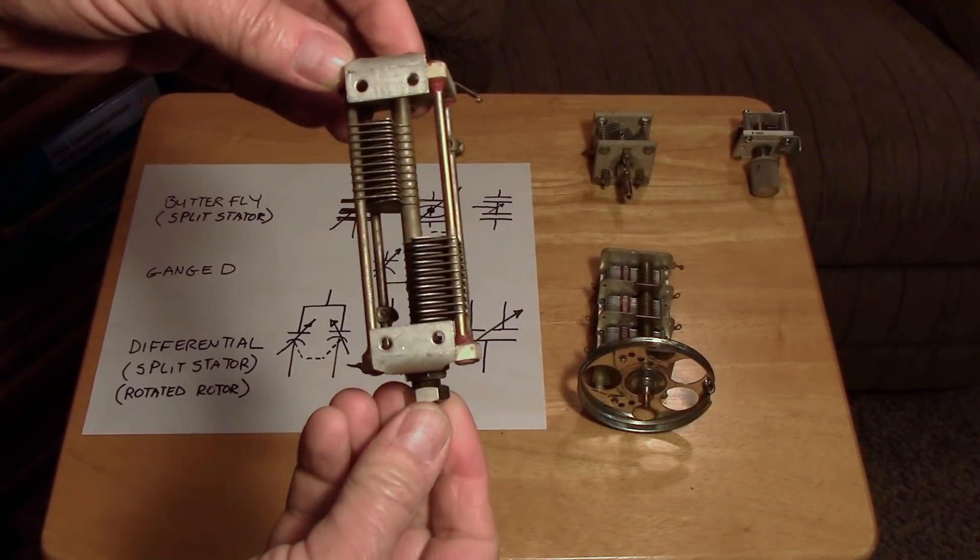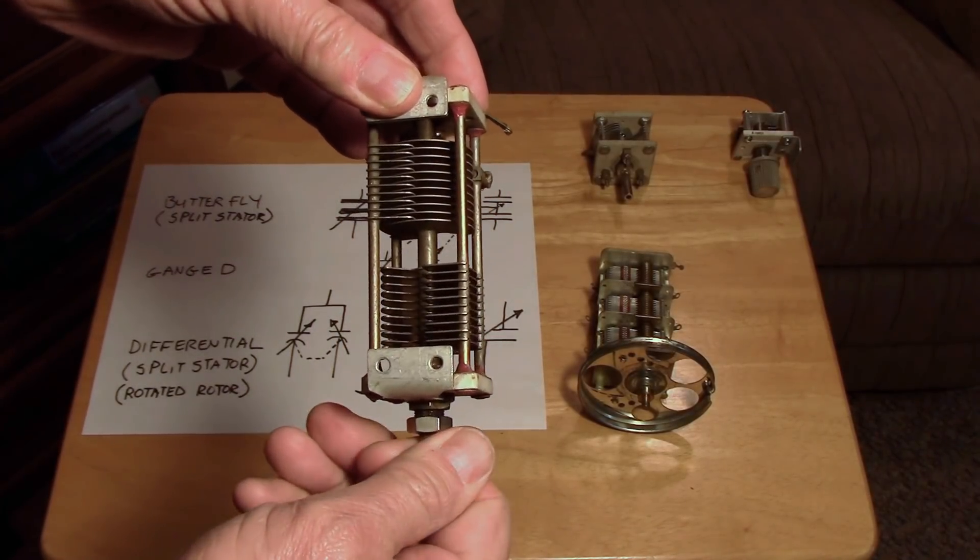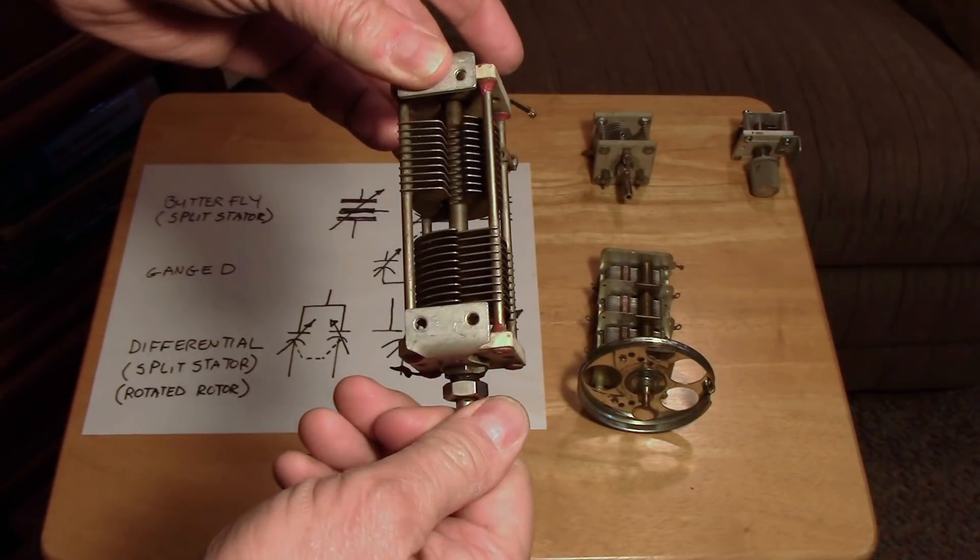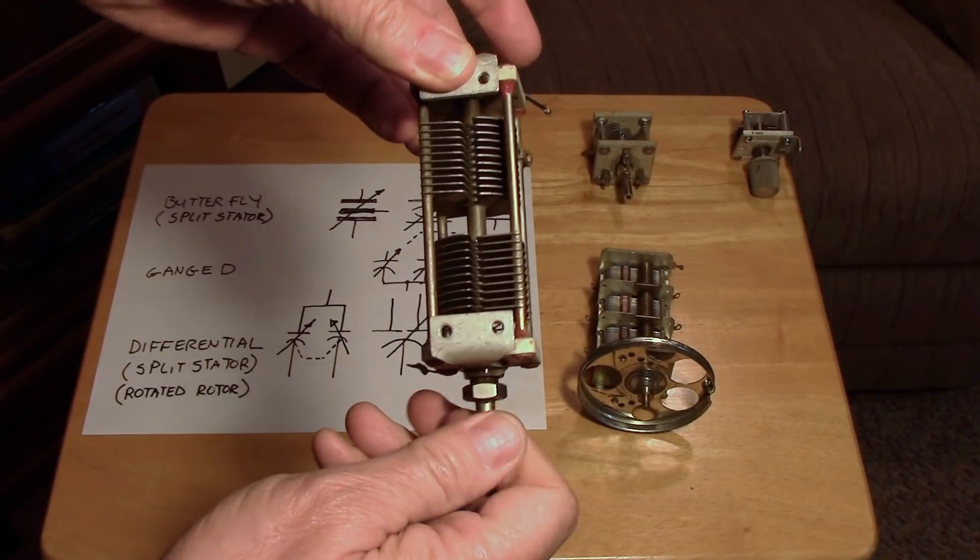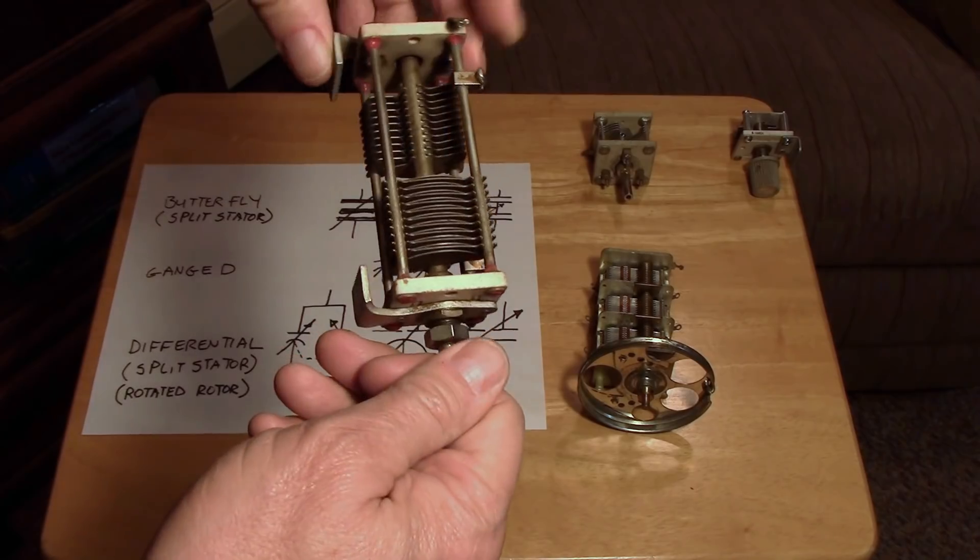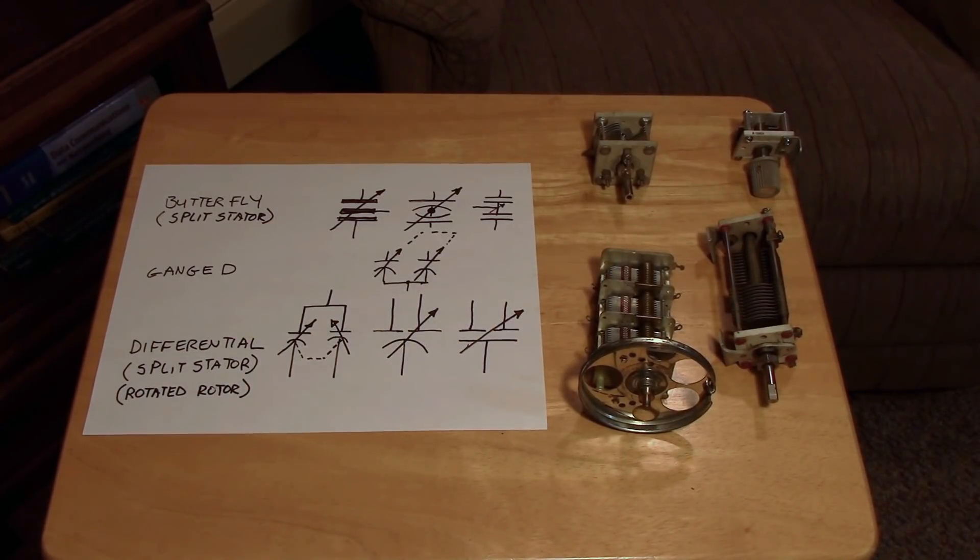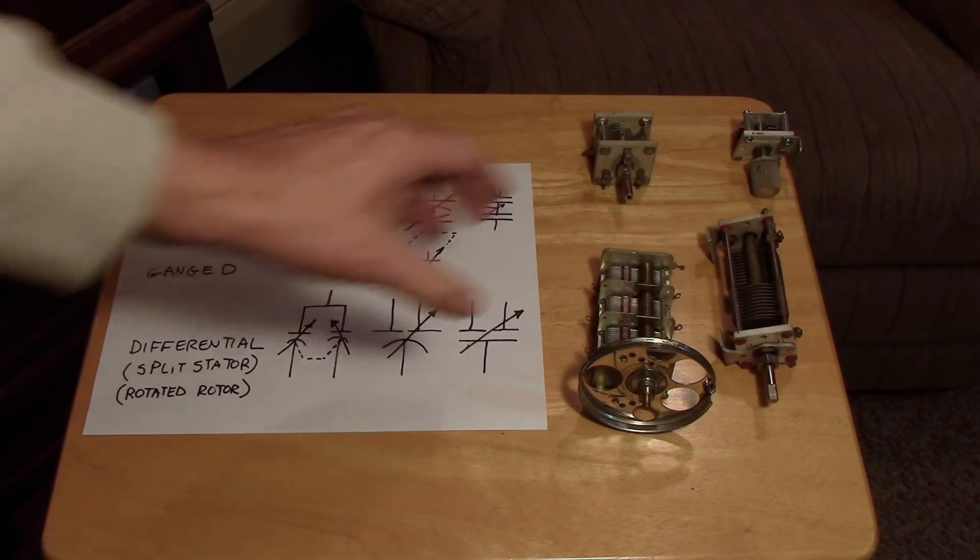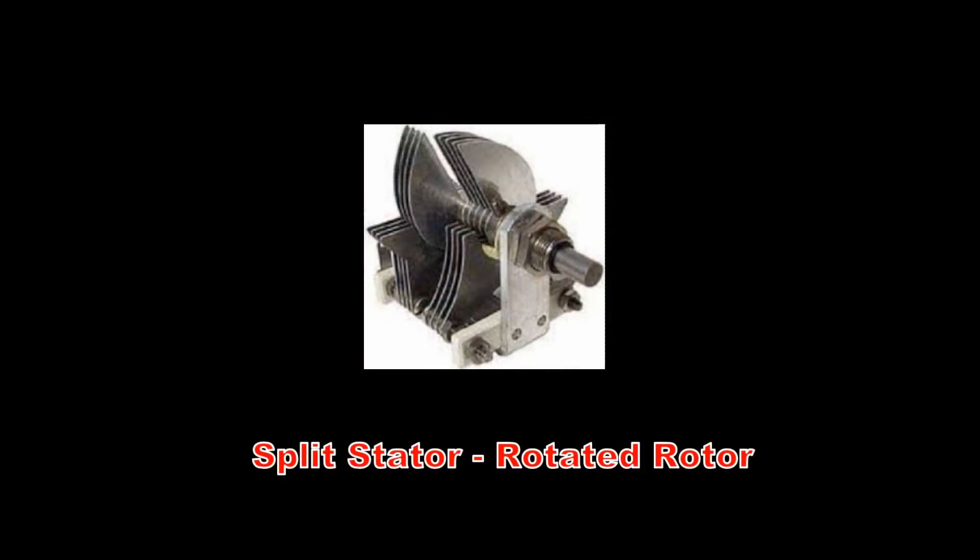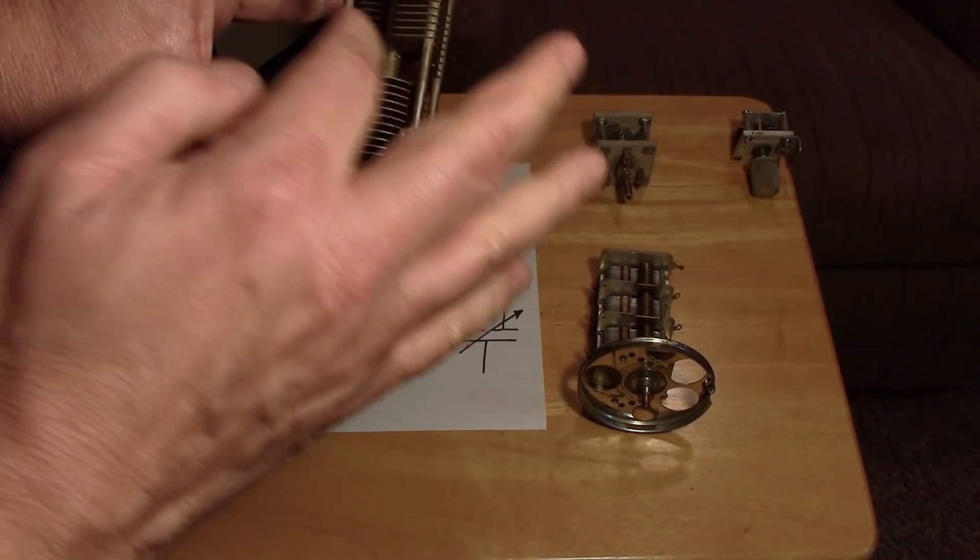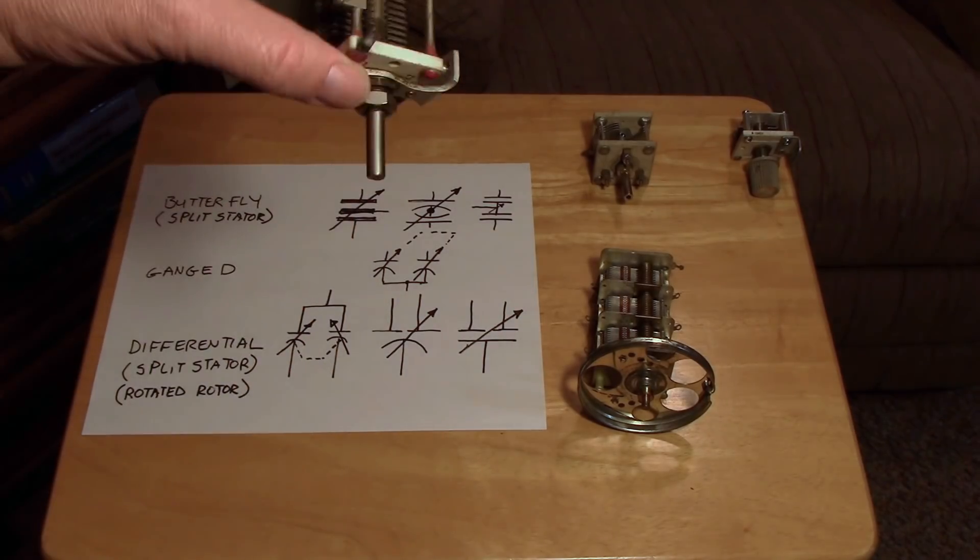Another version is the split stator capacitor. You have two different stators, one here and one here, and the rotor has opposing 180 degree out of phase vanes. That's another form of the butterfly really. The one I'm most interested in for this video is called the differential split stator. As this one was letting off capacity, this one would be adding capacity, making it a differential capacitor.